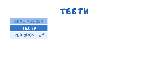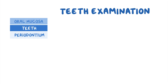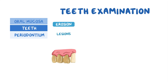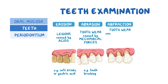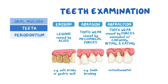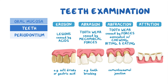Next is the examination of teeth. It's important to identify four main mechanisms of tooth wear: erosion, abrasion, abfraction, and attrition. Erosion refers to tooth lesions caused by acids not produced by oral bacteria, such as soft drinks or gastric acid. Abrasion is tooth wear caused by mechanical forces such as toothbrushing. Abfraction is tooth wear caused by forces associated with chewing, biting, and eating, and is typically found at the cementoenamel junction. Attrition refers to lesions caused by functional contacts with opposing teeth.